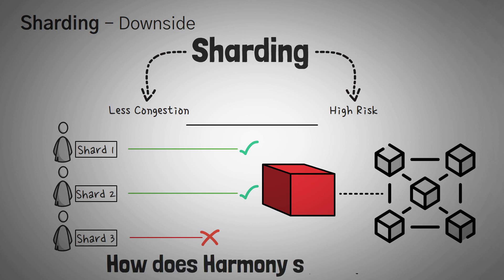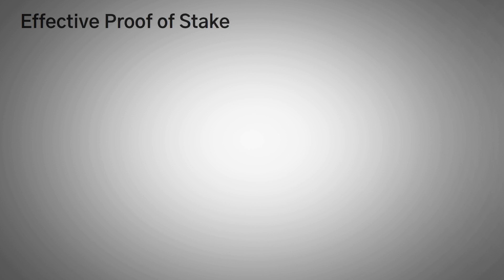If it does, you might be wondering, how does Harmony One solve this? Well, they use a slight modification of the proof of stake mechanism that many other blockchains actually already use. They created something called effective proof of stake.